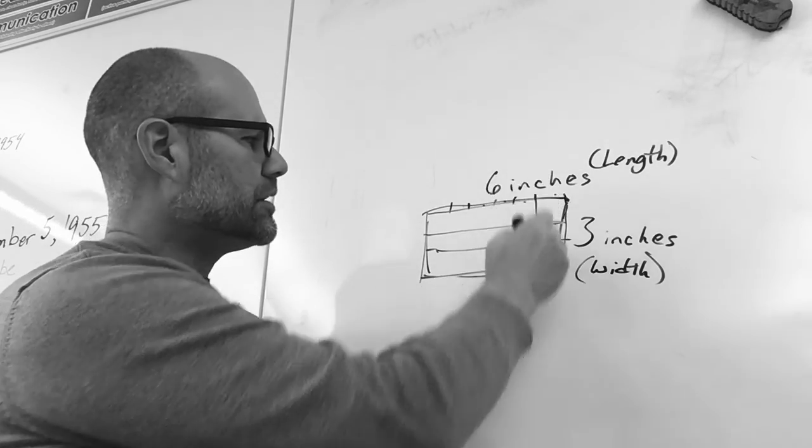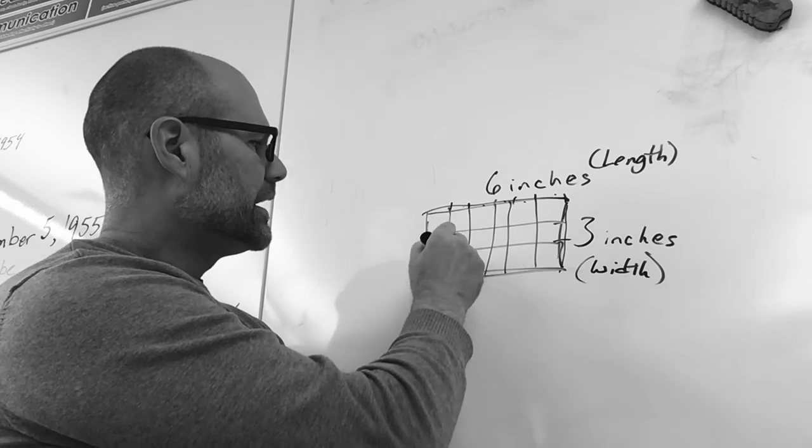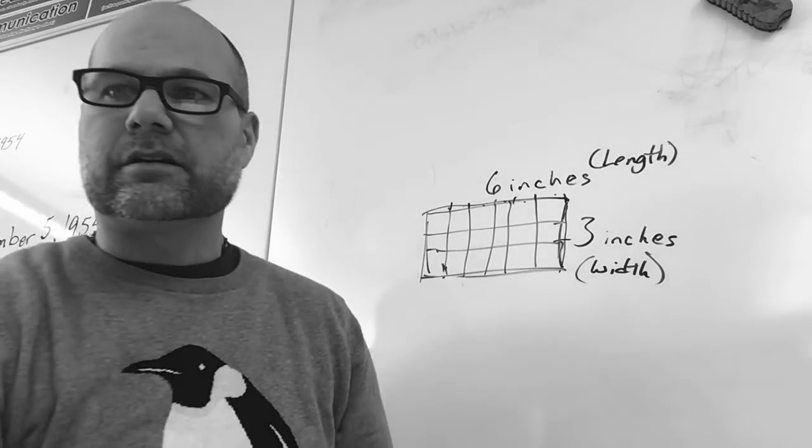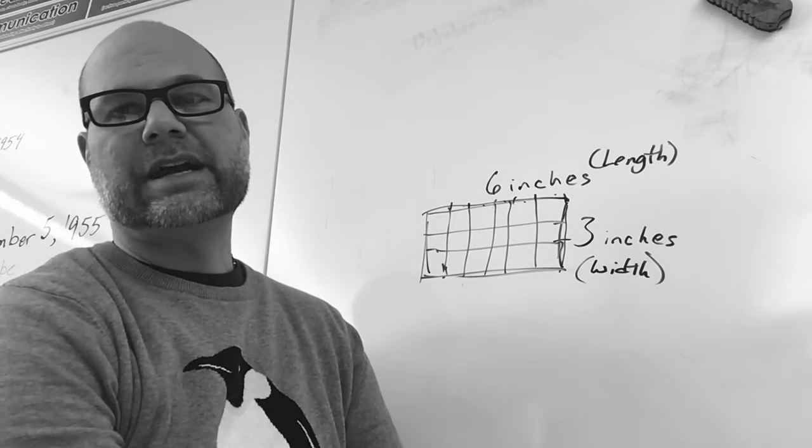And then I'm going to draw 6 columns, and each one of these is 1, 2, 3, 4, 5, 6, 6 inches wide. Alright, now, how many squares do I actually have? That's your area.